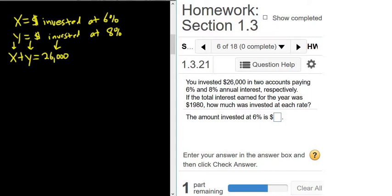Now the hard part. The total interest earned was $1,980. So we need to figure out what interest came from each account.